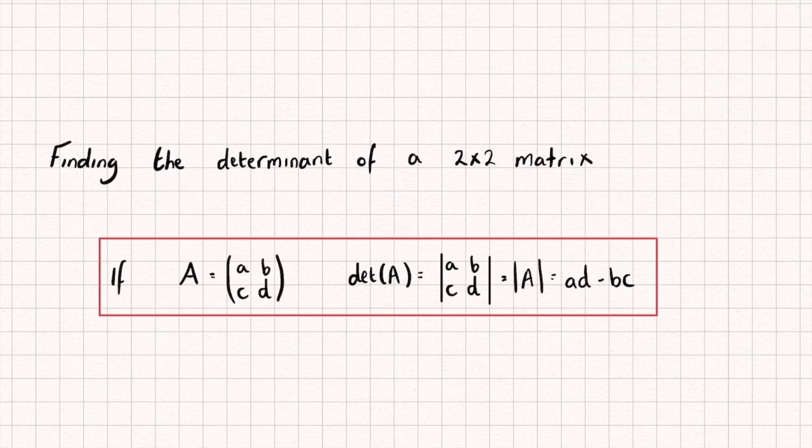Let's see then how we can find the determinant of a 2x2 matrix. So given a 2x2 matrix A here, the determinant, which can be written in these three different ways, is equal to AD subtract BC. So the product of the leading diagonals subtract the other one. It's pretty simple to calculate.